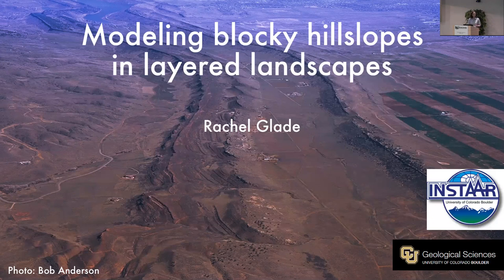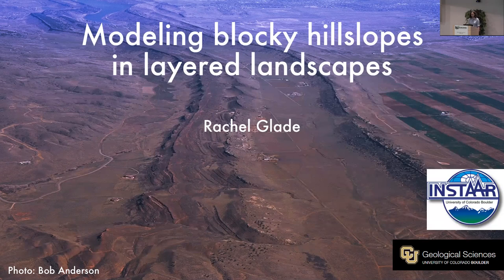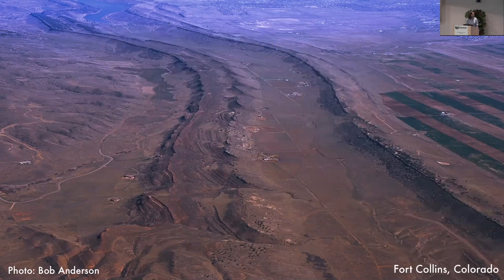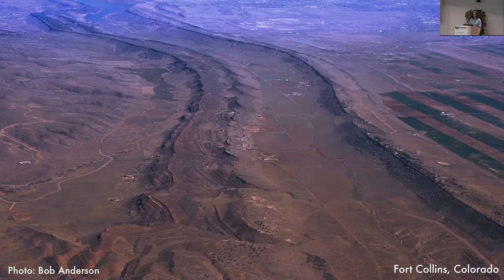If you look at Earth from above in this picture, in a plane or even from space, a lot of times you can see signatures of geologic structure and rock type on Earth's surface. For example, this is in Fort Collins, just an hour or so north of here. Here we have tilted layered sedimentary rock, and you can see the rock type stretching across the landscape. Resistant layers of rock set the relief of the landscape. They set drainage divides that can migrate over time.